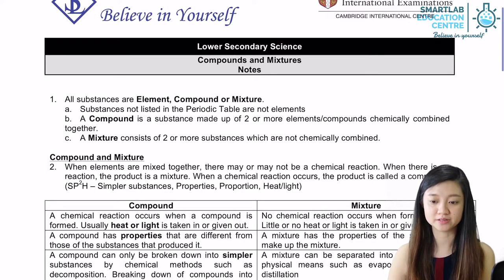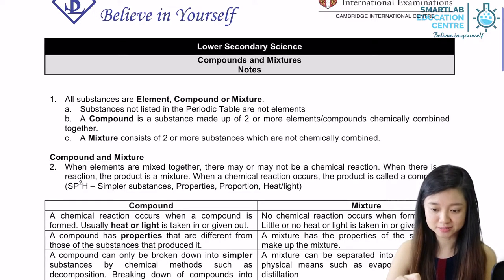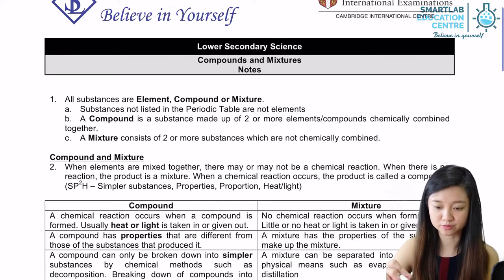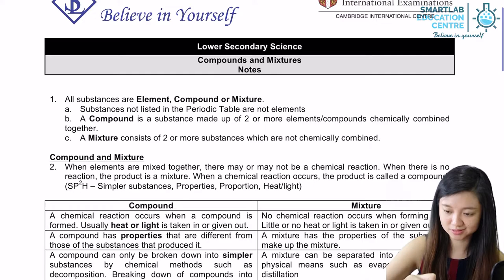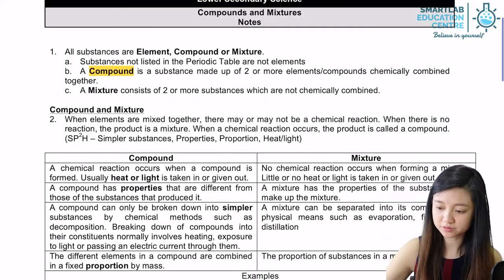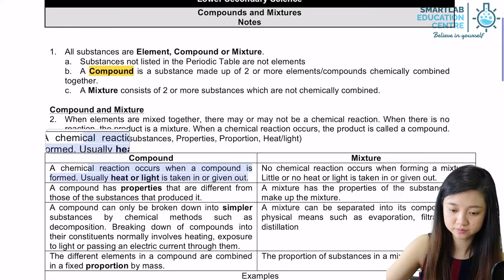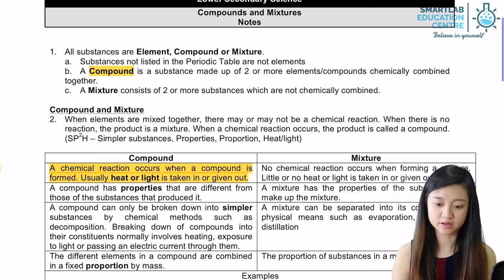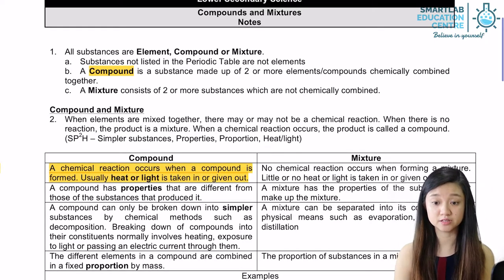Let's start on the topic of compounds. A compound is a substance made up of two or more different elements or compounds chemically combined together in a fixed ratio. When a compound is being formed, a chemical reaction will occur, and usually heat or light is given in or taken out.